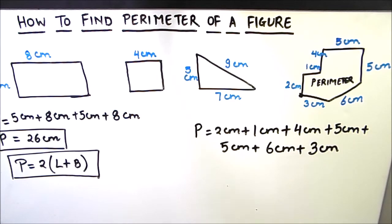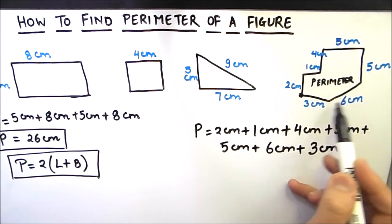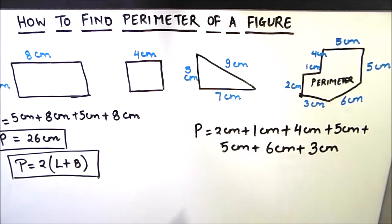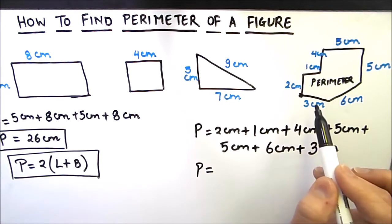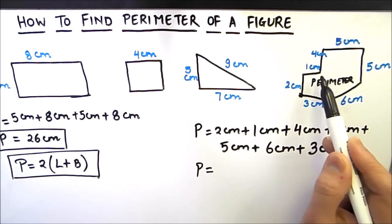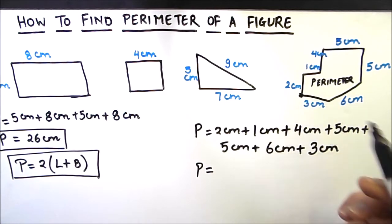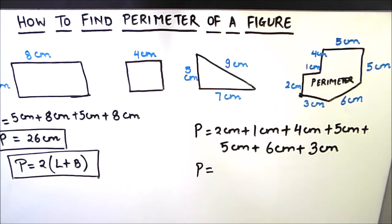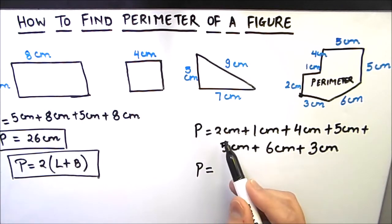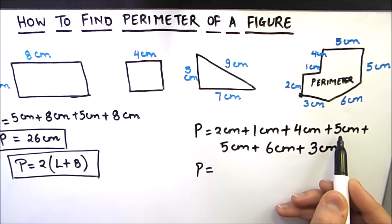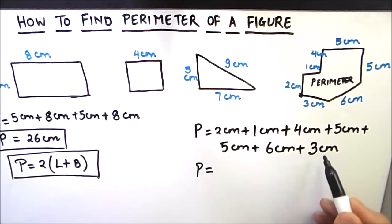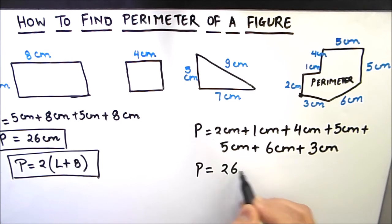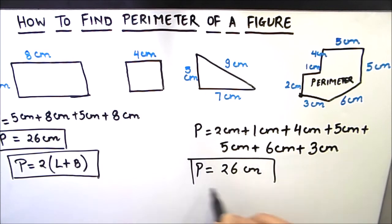You should start from one point and come back to the same point, adding sides one by one. Kids sometimes add sides twice or forget one side, so practice this method carefully. Adding up: 2 plus 1 is 3, plus 4 is 7, plus 5 is 12, plus 5 is 17, plus 3 is 20, plus 6 is 26. The perimeter of this complex shape is 26 centimeters. This is how you can find the perimeter of any figure by adding all its sides.